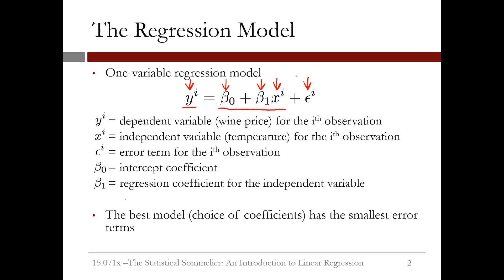Our errors will only all be zero if all our points lie perfectly on the same line. This rarely happens, so we know our model will probably make some errors. The best model — the best choice of coefficients beta_0 and beta_1 — has the smallest error terms, or smallest residuals.